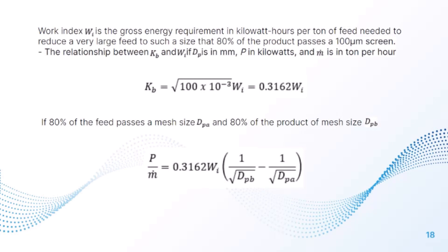The work index W_I is the gross energy requirement in kilowatt-hours per ton needed to reduce a very large feed to a size where 80% of the product passes a 100-micrometer screen. The relationship between K_D and W_I, where D_p is in millimeters, P is in kilowatts, and ṁ is in tons per hour, is: K_D = √(100 × 10^−3) × W_I = 0.3162 × W_I.